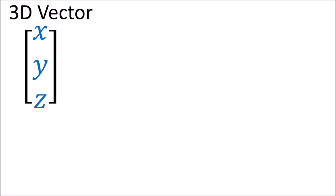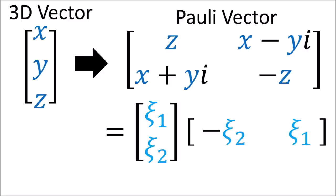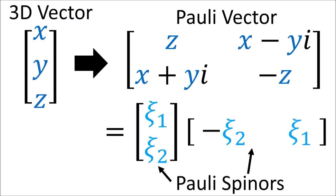In this video we're going to see how we can rewrite a 3D vector as a 2x2 matrix called a polyvector, and in the next video we're going to see how we can factor this polyvector into a pair of polyspinors.